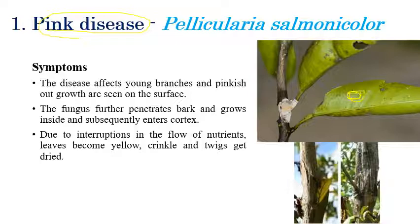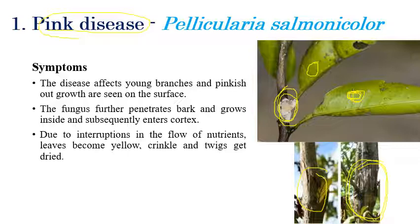This pinkish discoloration — the fungus further penetrates inside the bark and grows inside the cortex. Due to this, it completely blocks the transport of nutrients, minerals, and water required by the plant. As a result, yellowing of leaves can be observed on the upper surface, along with curling and crinkling, and in later stages the plant slowly dies.